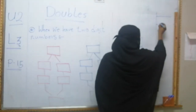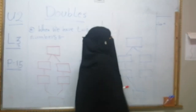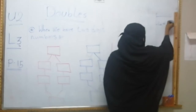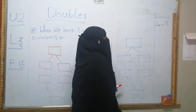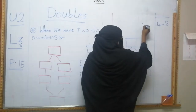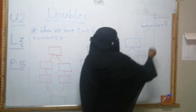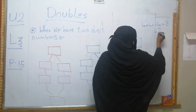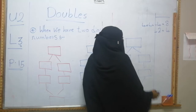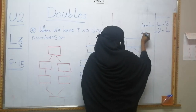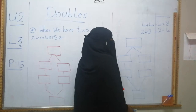So when I see double four, double four equals eight. We say four plus four equals eight. Again, double two. Double two equals four, which means two plus two equals four.